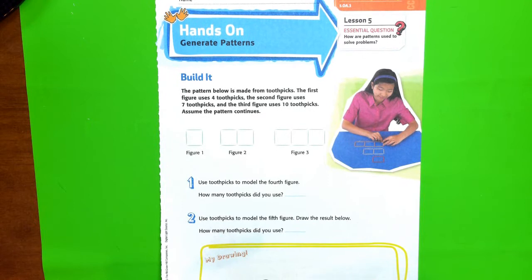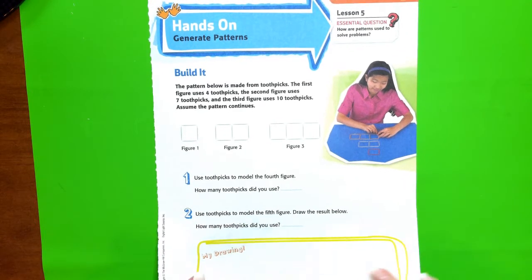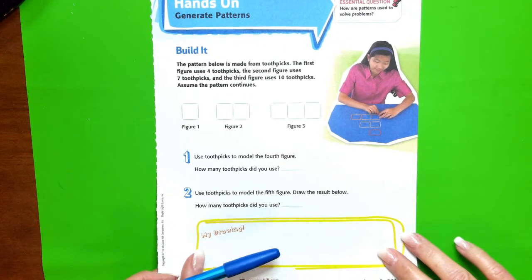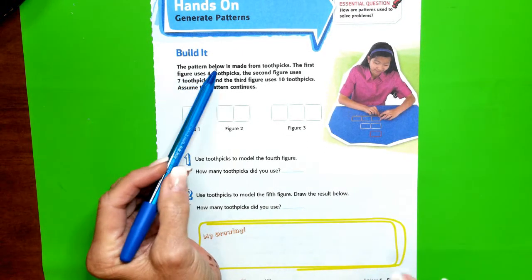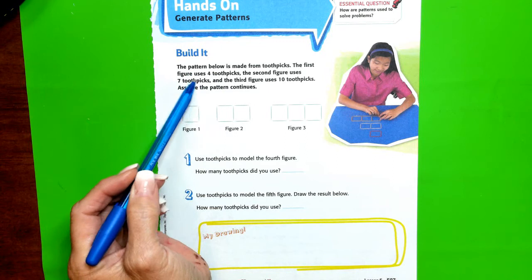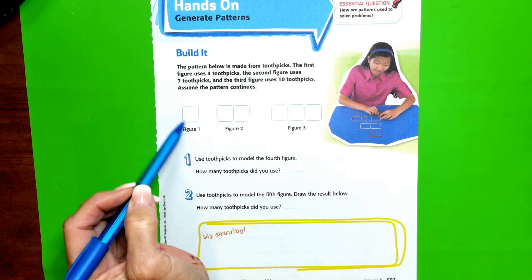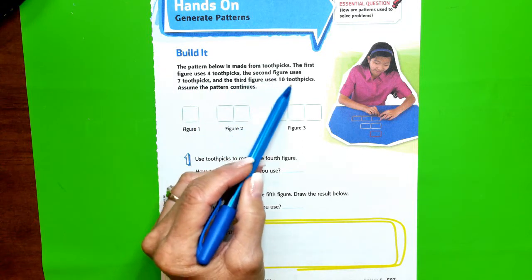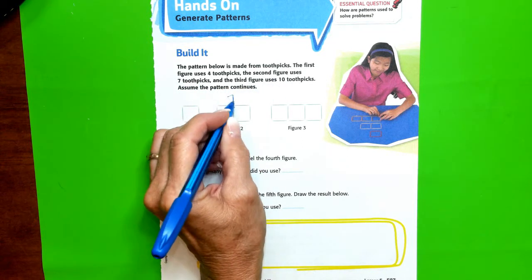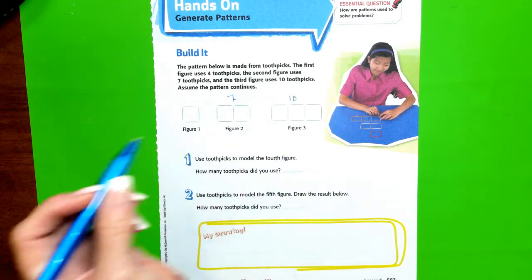Alright, Chapter 7, Lesson 5, Hands-On: we're going to generate some patterns. Let's build it. The pattern below is made from toothpicks. The first figure uses 4 toothpicks (1, 2, 3, 4), the second figure uses 7 toothpicks, and the third figure uses 10 toothpicks.